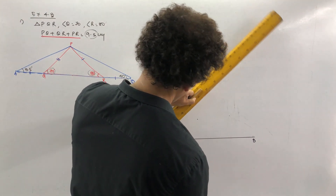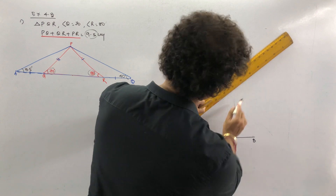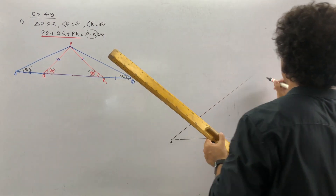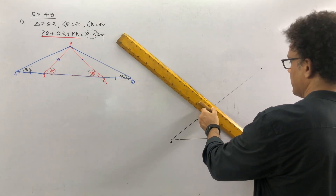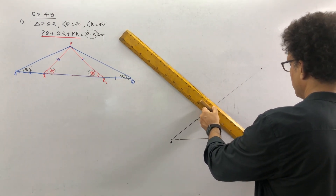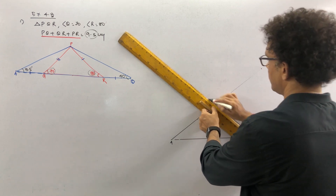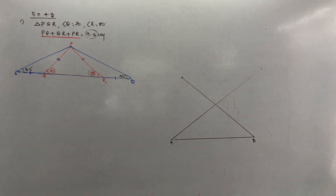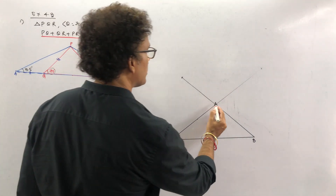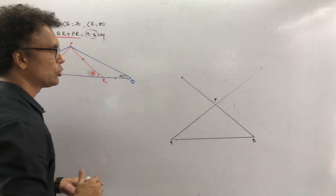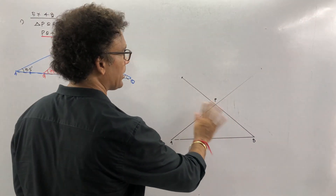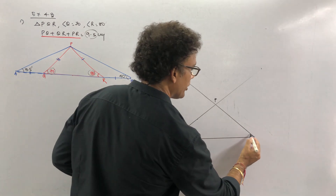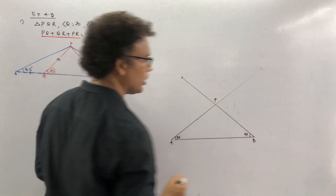From the left end draw 35 degrees, and from the right end draw 40 degrees. So this is 35° on one side and 40° on the other side. Now pay attention — you can write this point as P. This is not the actual triangle yet. You have drawn 35° here and 40° there.